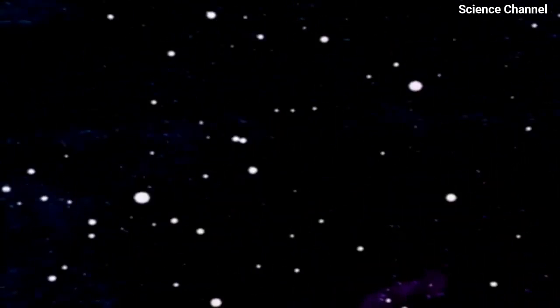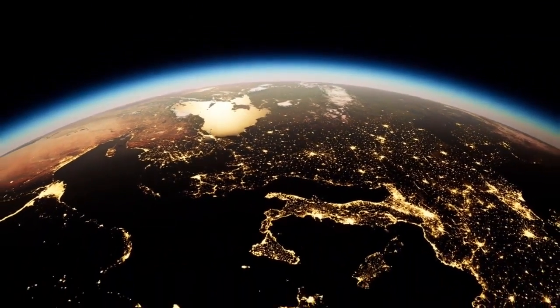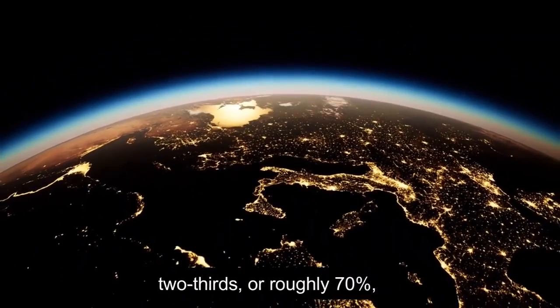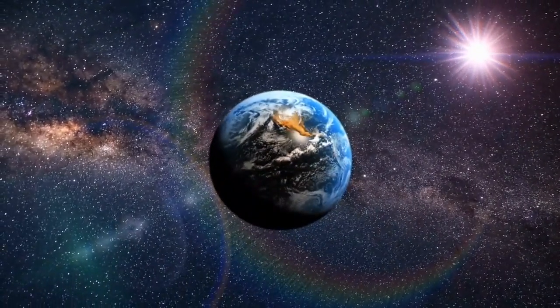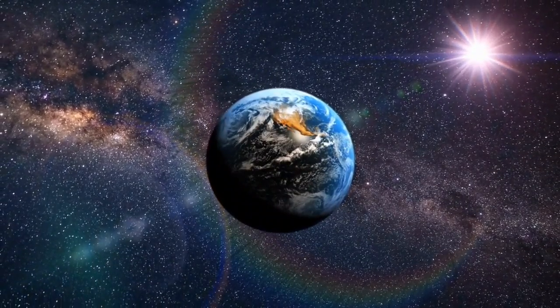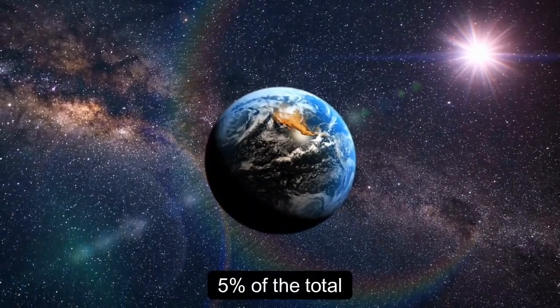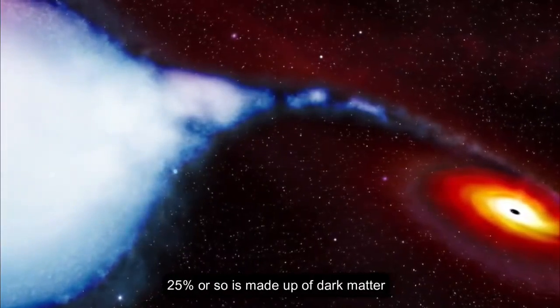The best theory that we have is that there is some unknown energy in space called dark energy. It pervades all of space, acting as an anti-gravity force or negative pressure, pushing things apart. We've since discovered that this energy constitutes more than two-thirds, or roughly 70% of the total energy of the universe. All visible matter that we can see, including humanity, the Earth, and the stars and the galaxies account for nearly 5% of the total. The remaining 25% or so is made up of dark matter.